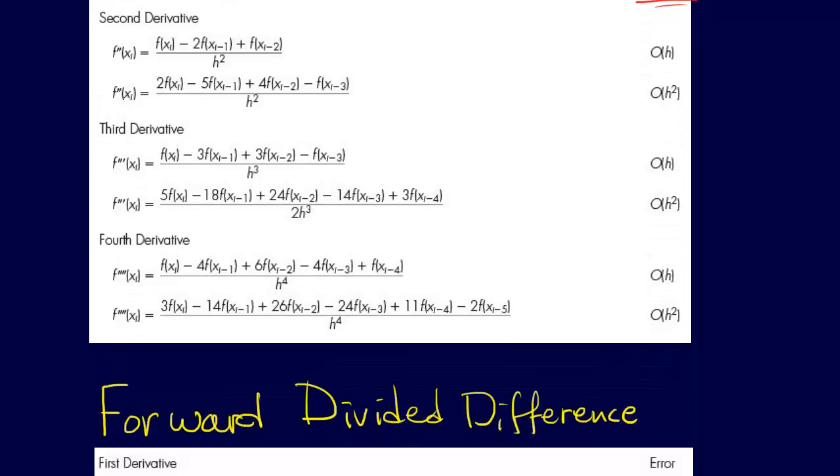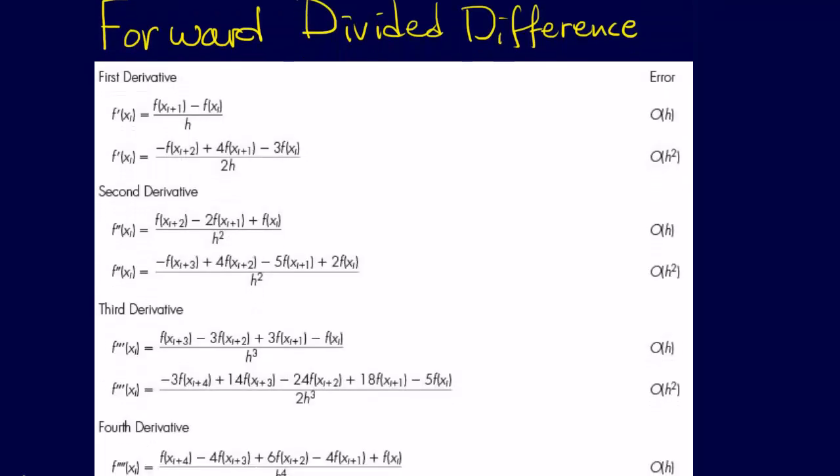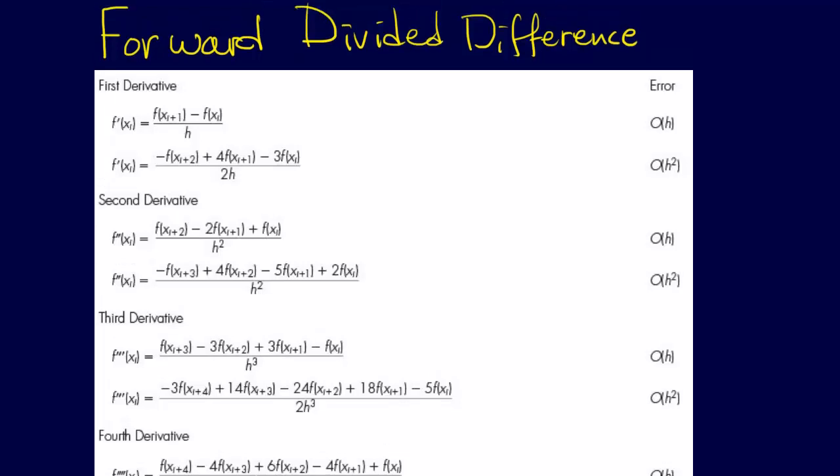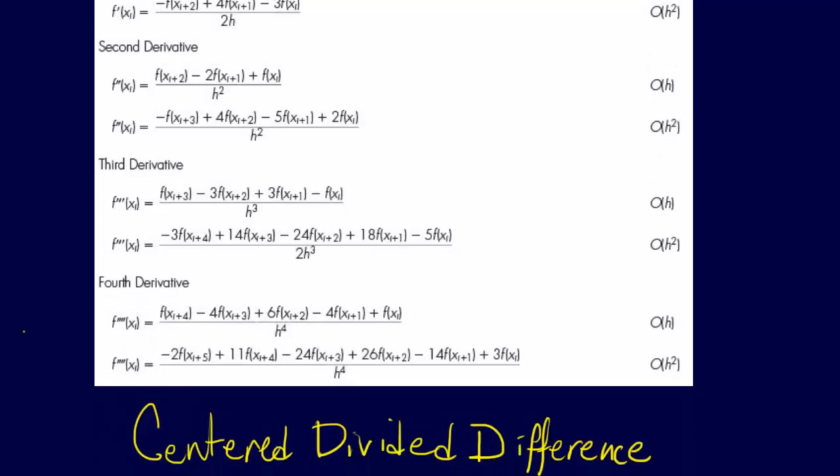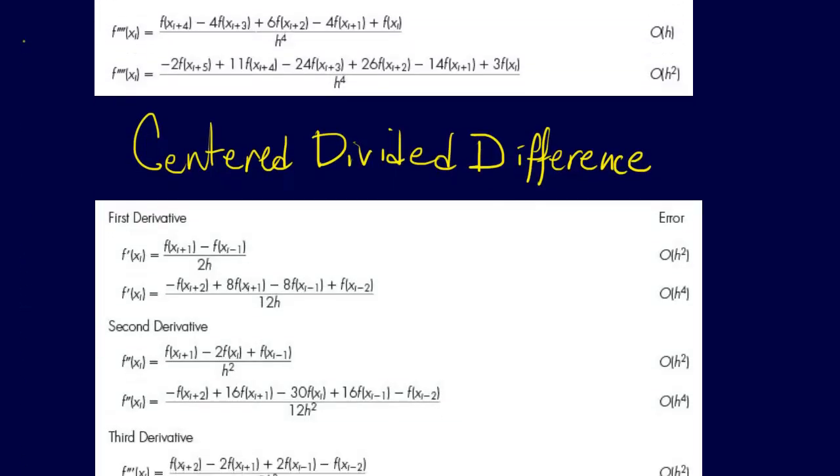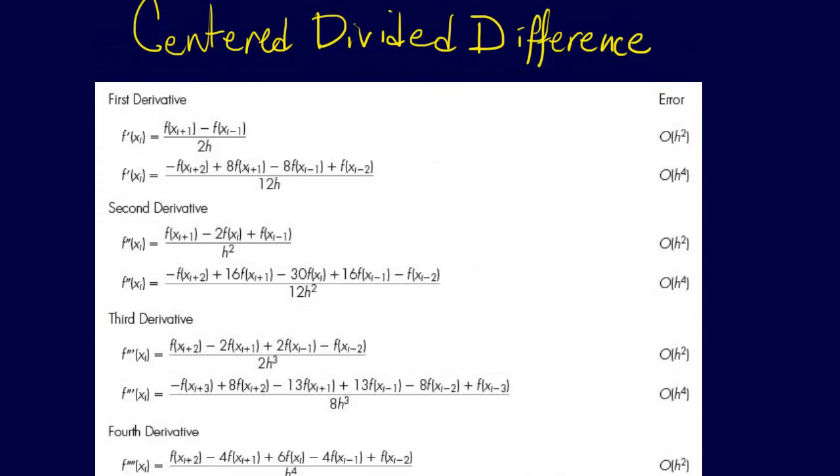The forward difference method looks very similar to the backward difference method. And then the center difference approach is what we'll typically use, where we have, you can see, the order h squared and order h to the fourth with the same number of points as getting error order h or order h squared with the forward or backward difference methods.